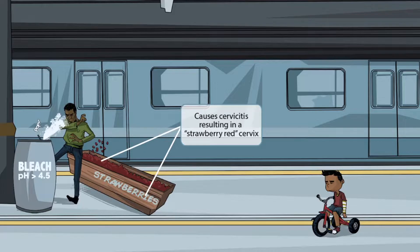You may be wondering why the trough had strawberries written on the side. The metro station provides complimentary strawberries to keep passengers happy as they wait. The strawberries flying into the air when the trough was bumped make reference to the strawberry cervix that is often seen on examination in patients with Trichomonas infections.